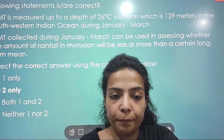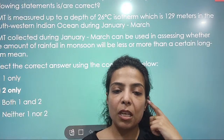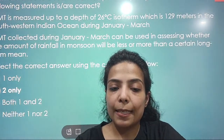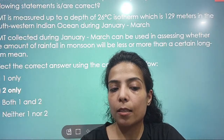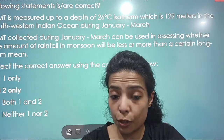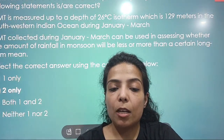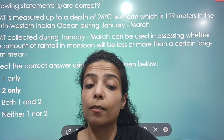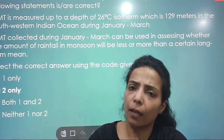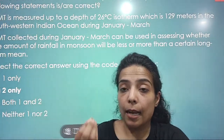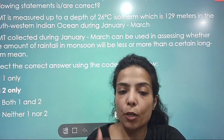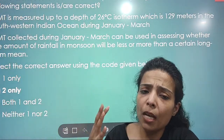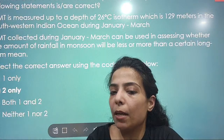With reference to ocean mean temperature: which of the following statements are correct? OMT is measured up to a depth of the 26°C isotherm, which is stated as 129 meters in the south-western Indian Ocean during January to March. And OMT collected during January–March can be used in assessing whether the amount of rainfall in monsoon will be less or more than a certain long-term mean. The problem with the first statement is that it is not 129 meters — it is much lower.